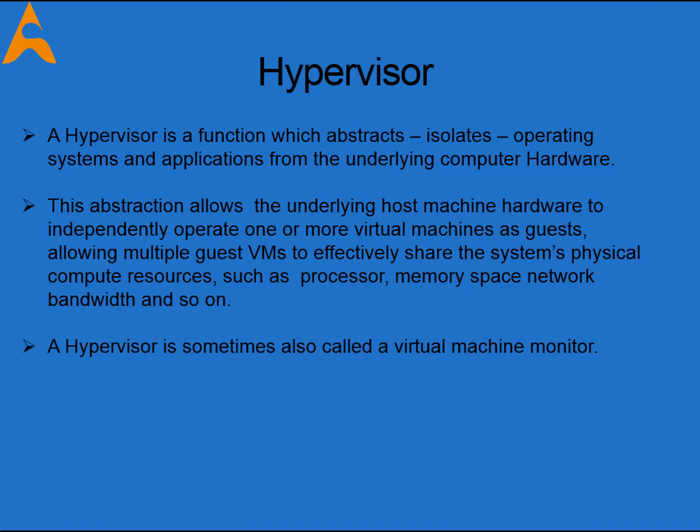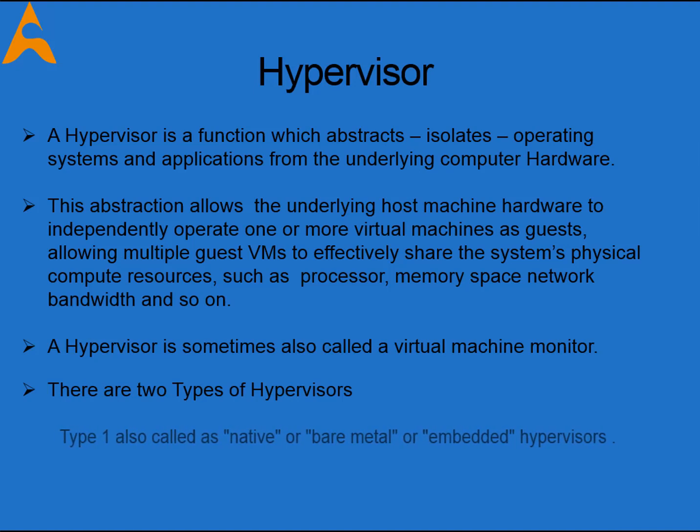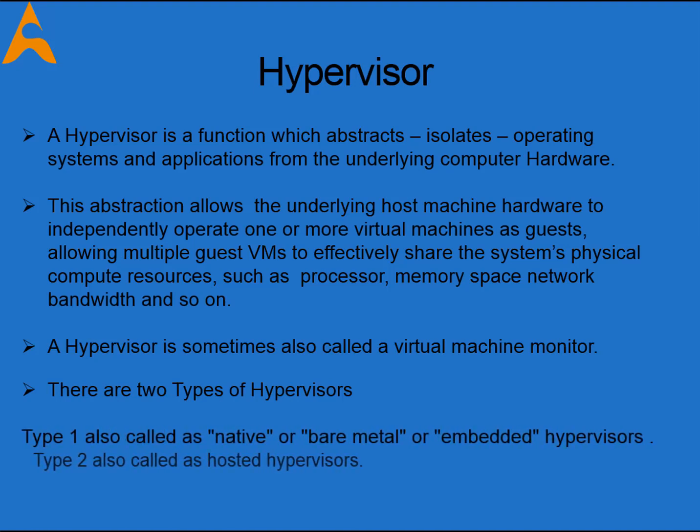With virtualization it becomes a much more efficient use of resources. Most computers operate using only five to ten percent of their resources. By virtualizing these computers, you can get many guests onto one host, resulting in greater efficiencies in power consumption, physical space, and fewer people needed to look after the equipment. There are two types of hypervisor: Type 1 and Type 2.